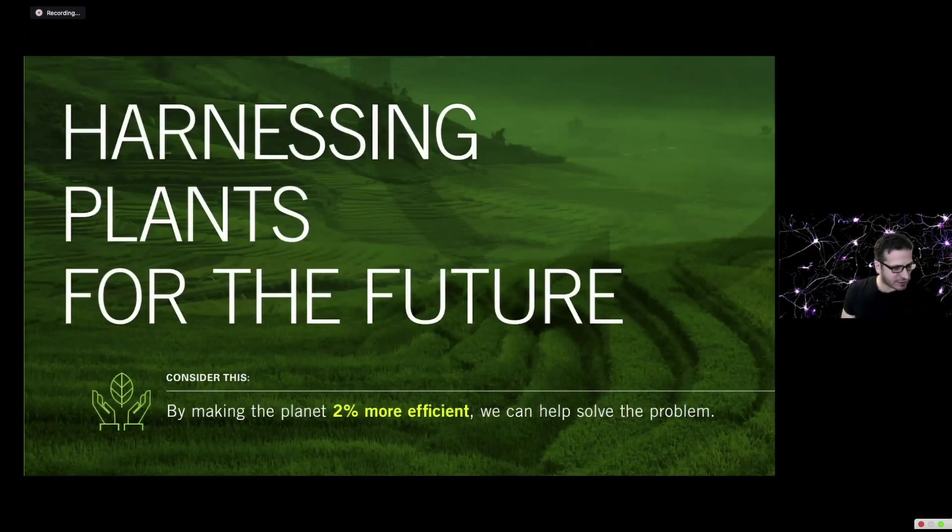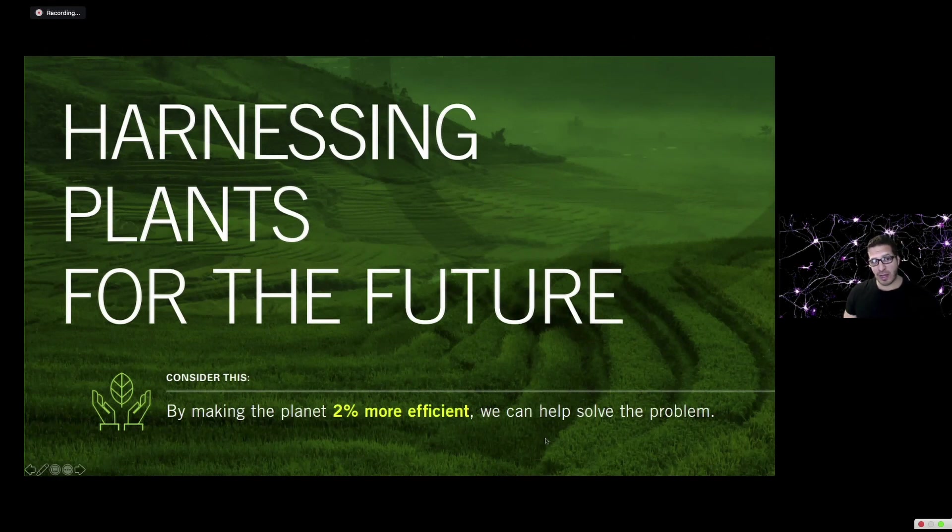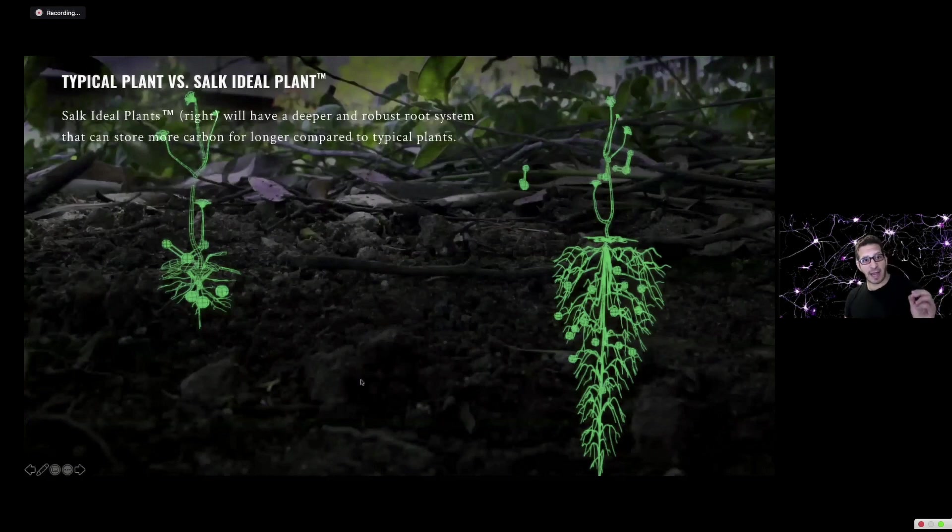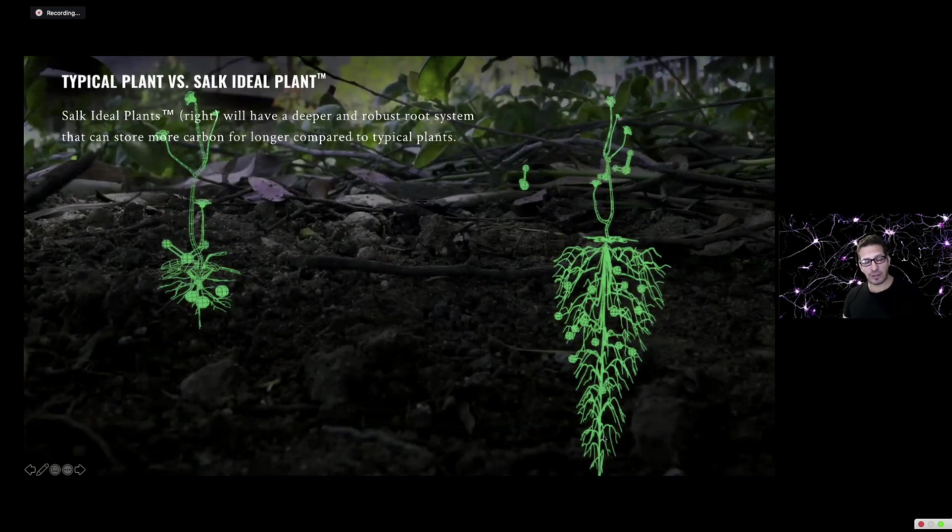I want to talk about one other artificial intelligence example at Salk. You heard mention of the Harnessing Plants Initiative at Salk, where we're trying to make plants more efficient to capture more carbon out of the atmosphere to fight climate change. As it turns out, one of the best ways that plants capture carbon is in their roots. Their roots are very carbon-rich. To capture more carbon, we would love to have more elaborate and better root systems. Roots are also important for surviving climate change. If you want to deal with drought or excessive heat, roots are very important.